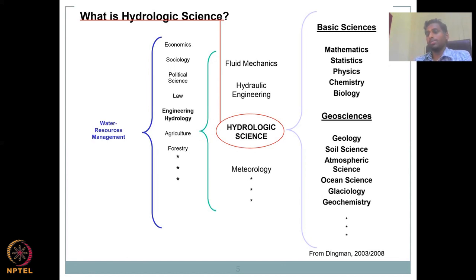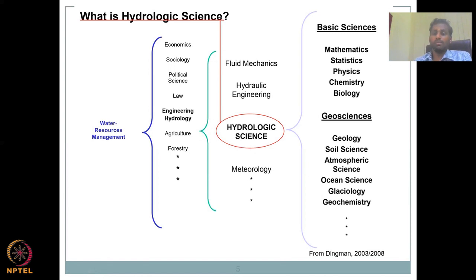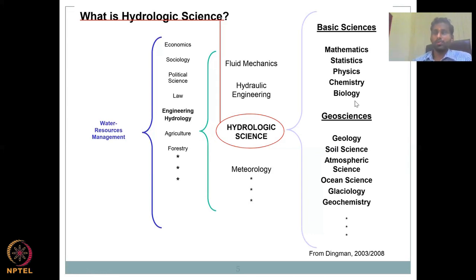This is similar to being a doctor: you can be a general doctor, or specialize as a surgeon, diabetics specialist, or pediatrician. Hydrological science is a combination of different sciences and engineering aspects. In basic sciences it includes mathematics — which drives all science — as well as physics, chemistry, biology, and statistics. Statistics should be understood in terms of its limitations and strengths before applying it.